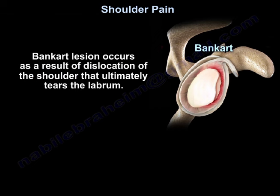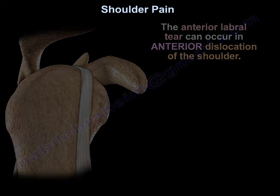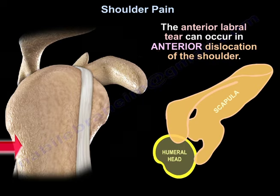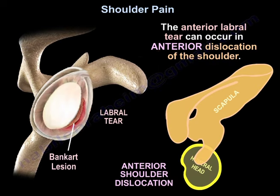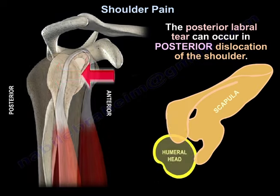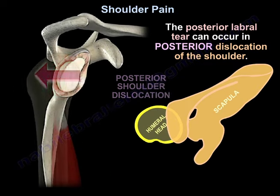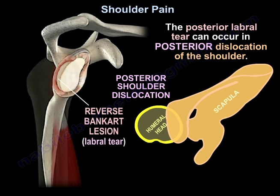Bankart lesion occurs as a result of dislocation of the shoulder that ultimately tears the labrum. The anterior labral tear can occur in anterior dislocation of the shoulder, and the posterior labral tear can occur in posterior dislocation of the shoulder.